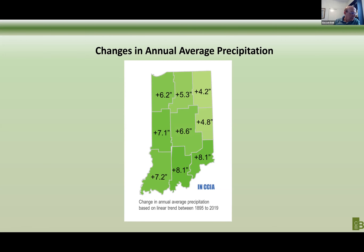This graph you've probably seen before — it's the latest work from the Purdue Climate Center. They have looked at the increase in annual precipitation over the years, from 1895 to 2019 — almost 120 years. What we have been seeing is an increase in annual rainfall. The amount varies depending on location, but still very significant in terms of our area of interest.